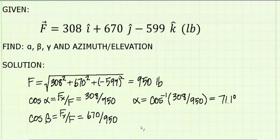The cosine of beta is the y component of the force divided by the magnitude. Solving for beta, we get 45.1 degrees.